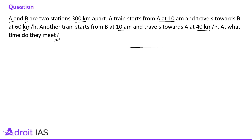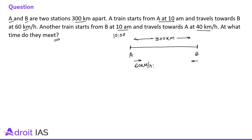The situation is like this: A and B are two stations 300 km apart from each other. At 10 AM both trains are starting towards each other. From A, the train is starting towards B at 60 km per hour, and at the same time the train is starting from B towards A at 40 km per hour. So both trains are approaching each other at 100 km per hour, which is equal to the sum of the two speeds.